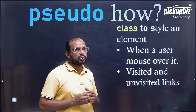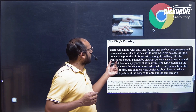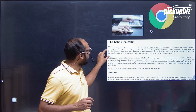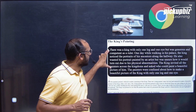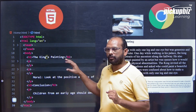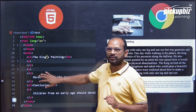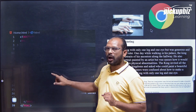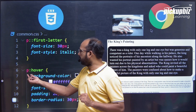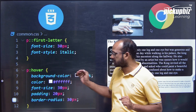Let's have one example of pseudo classes. In this example, we are going to see a mouse hover effect — I want a specific style to reflect as soon as I hover over my paragraph. In order to achieve this, we implement the HTML with a similar paragraph and content as usual. On mouse hover, we implement the CSS using p:hover, where I can give a specific background color, color, font size, padding, and border radius.